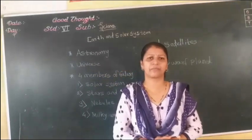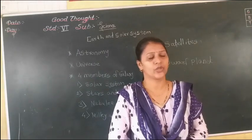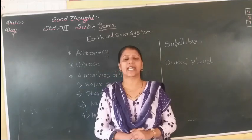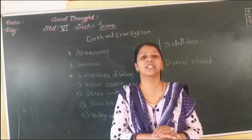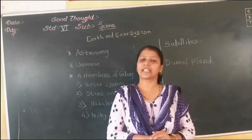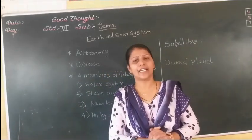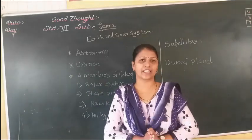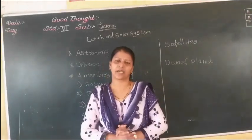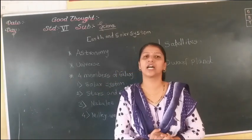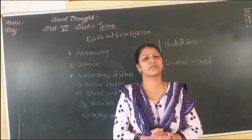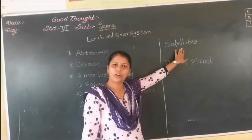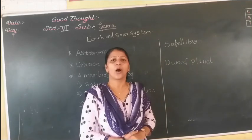Moon does not have its own light — it takes light from the Sun. So at night it looks bright, and that is why we can see the Moon during night. It takes light from the Sun and is visible to Earth. So the natural satellite of Earth is the Moon.